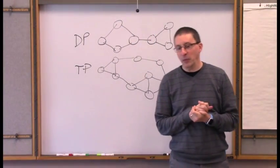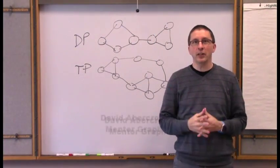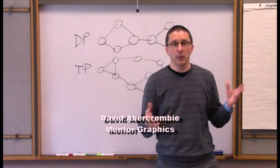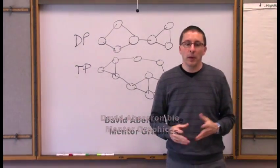Certainly double patterning was the key to getting us to 20 nanometer, so everything below 28. Starting at 20 needed double patterning.